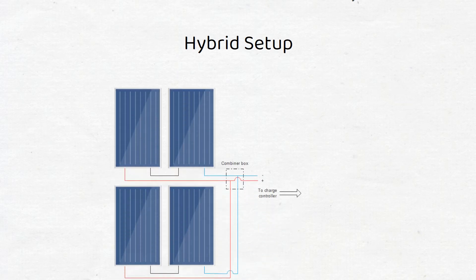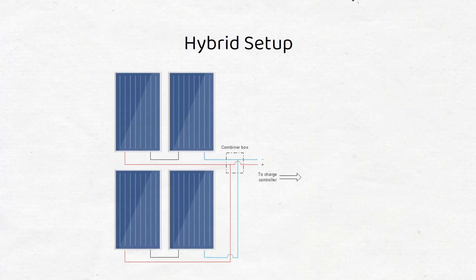A hybrid setup, also called series-parallel setup, combines series and parallel connections. This can be useful on a boat. If you have a total of 4 panels, place 2 panels on port and 2 on starboard. You would then wire 2 in series and then combine both of the series strings in parallel.